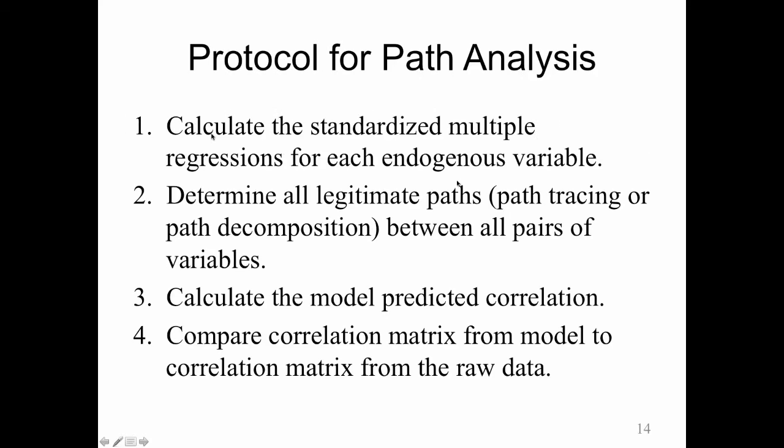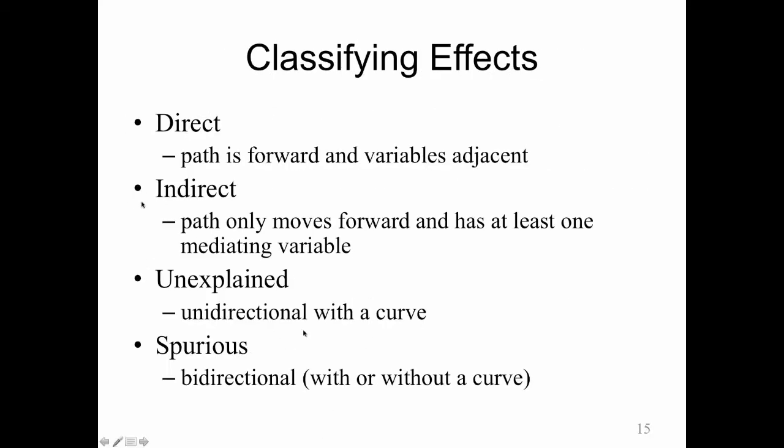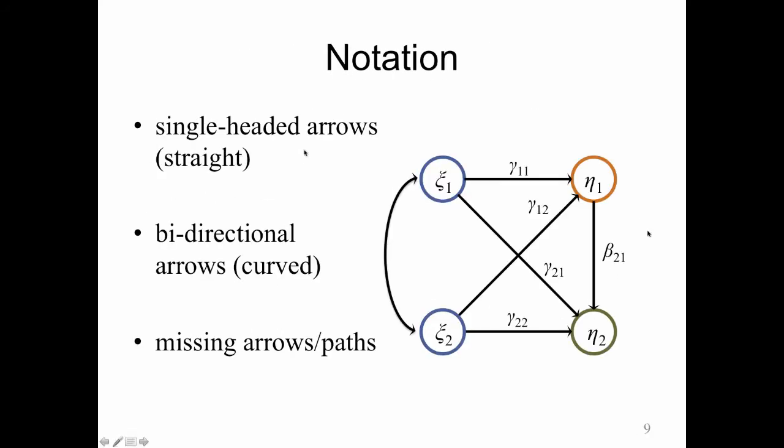The last one is the spurious effect. And that's any time you have a bidirectional path. And it can include a curve. It doesn't actually matter. So a spurious effect is the bidirectional path. So let's look at this one. The most obvious bidirectional path is from eta 1 to eta 2. The bidirectional path here is going back along gamma 1,1 to psi 1, cross the path, and then move back toward eta 2 along gamma 2,2.